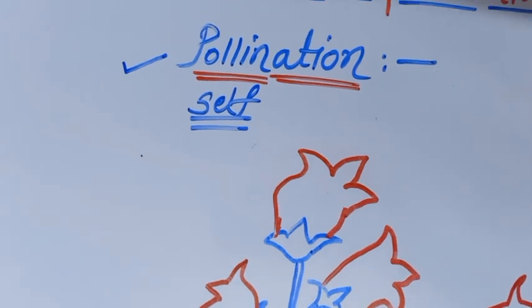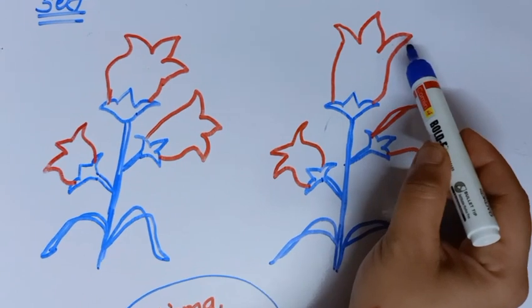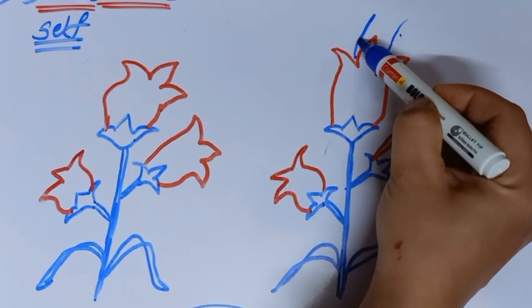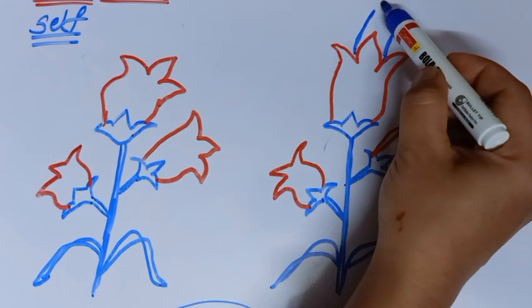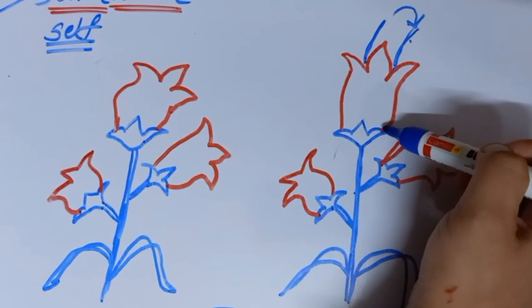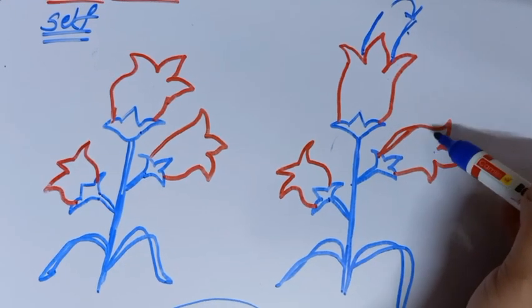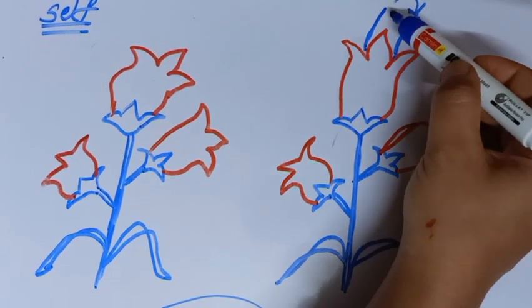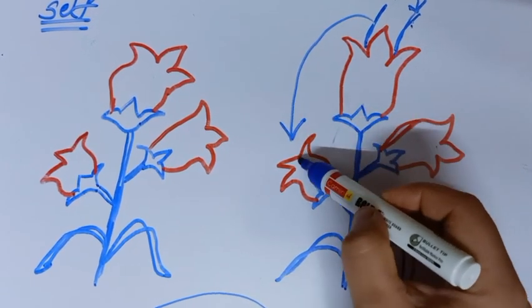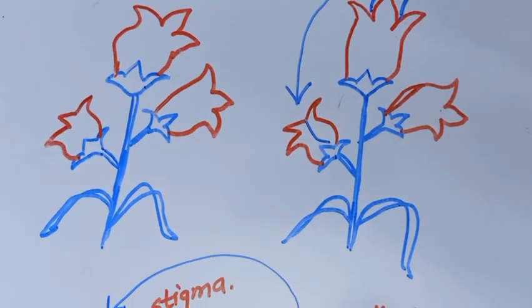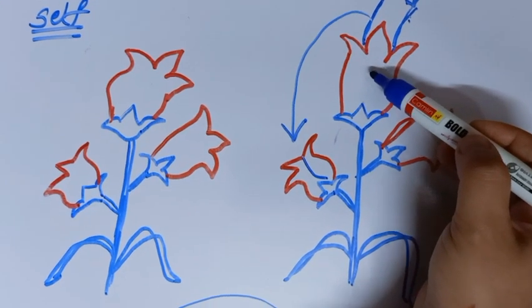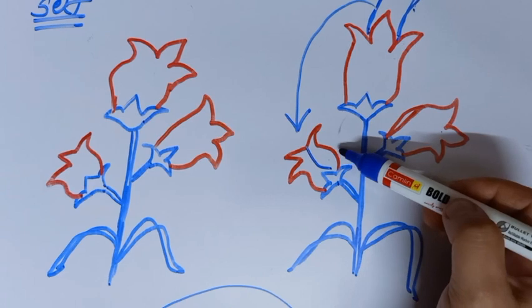In self-pollination, the transfer of pollen grain from the anther of the stamen to the stigma of the carpel takes place in the same flower of the same mother plant, or in 2 different flowers of the same mother plant. So self-pollination means the transfer occurs either within the same flower or between flowers on the same plant.